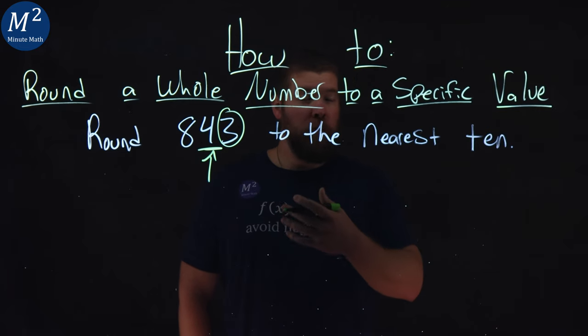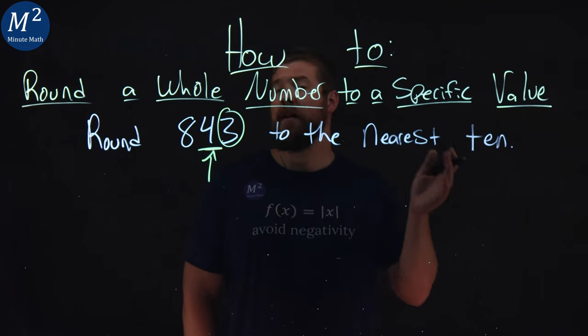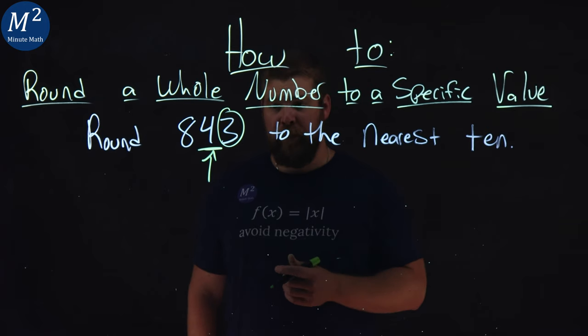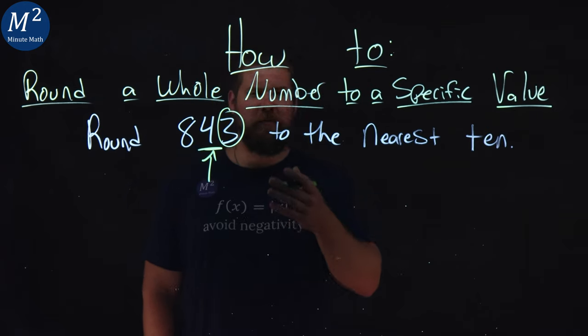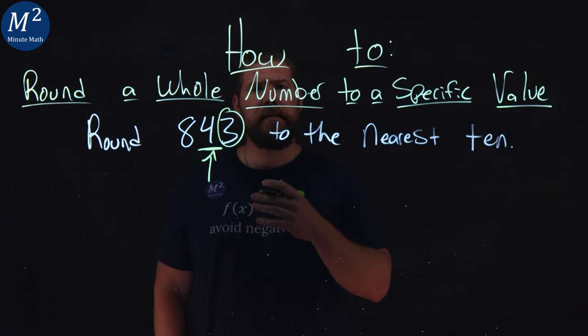If it's between 0 and 4, we round down. If it's between 5 and 9, we round up. 3 is between 0 and 4, clearly. So we round down.